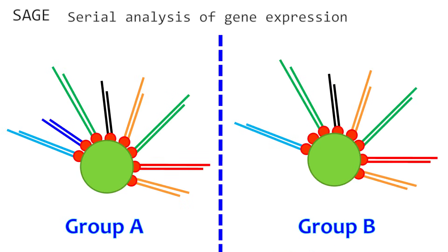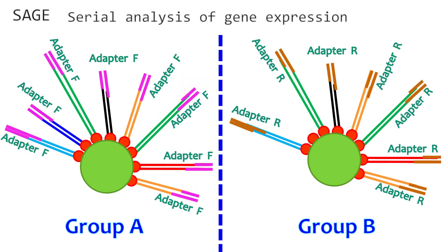This mixture is then divided into two parts. The sticky ends of the digested cDNA are then ligated with an adapter. The adapters used for both these mixtures are different. Adapter F has its sequence complementary to the forward primer, whereas adapter R has its sequence complementary to the reverse primer.